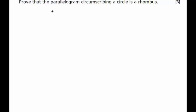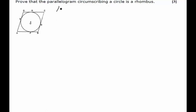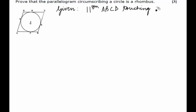Hello students. In this example we have to prove that the parallelogram inscribing a circle is a rhombus. Therefore we draw the figure — we have parallelogram ABCD touching the circle with center O. And we have to prove that ABCD is a rhombus.